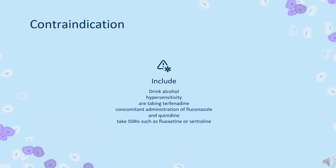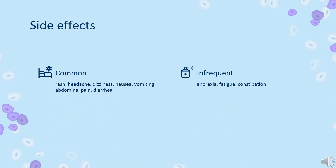Contraindication. Fluconazole is contraindicated in patients who drink alcohol, have known hypersensitivity to other azole medicines such as ketoconazole, are taking terfenadine if a 400 mg per day multi-dose of fluconazole is administered, concomitant administration of fluconazole and quinidine especially when fluconazole is administered in high dosages, or take SSRIs such as fluoxetine or sertraline.